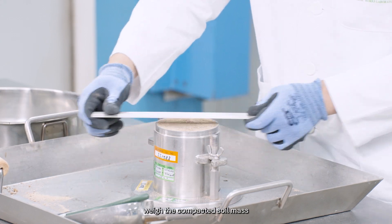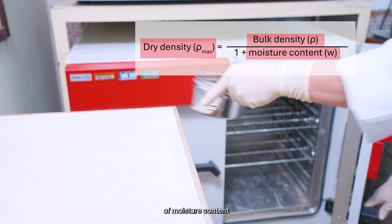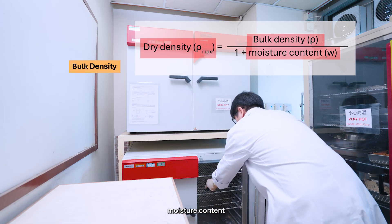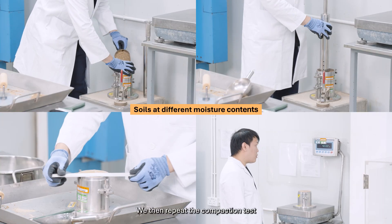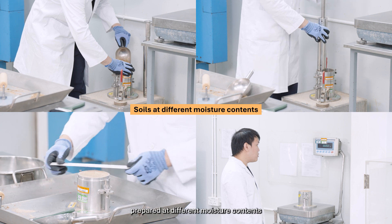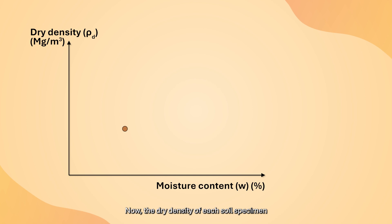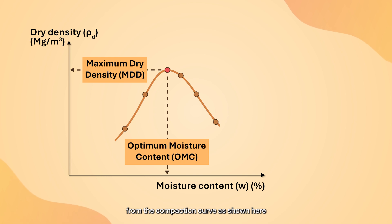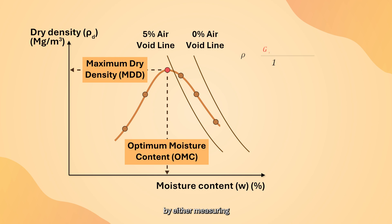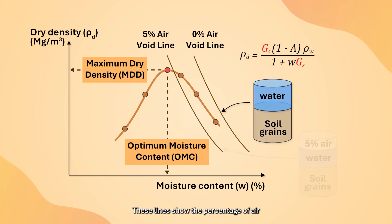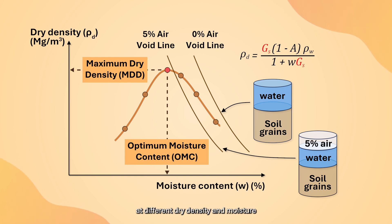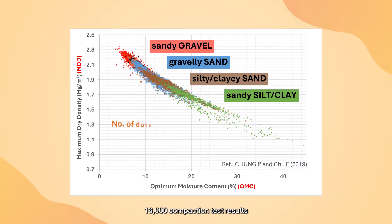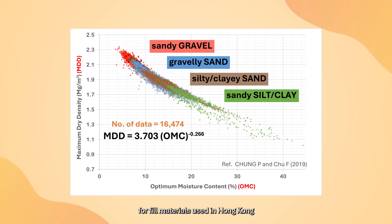Upon completion of compaction, weigh the compacted soil mass and collect a specimen from the soil mass for determination of moisture content. We can thus obtain the bulk density, moisture content, and dry density of the soil specimen. We then repeat the compaction test at least 4 more times with the soil specimen prepared at different moisture contents. The dry density of each soil specimen is plotted against the respective moisture content, and a compaction curve is drawn. The maximum dry density and optimum moisture content can be identified from the compaction curve. Air void lines are drawn in the same plot using the particle density Gs of the soil, showing the percentage of air voids at different dry density and moisture content combinations. Based on a review of over 16,000 compaction test results, an empirical correlation has been established between the MDD and OMC under the standard proctor test for fill materials used in Hong Kong.